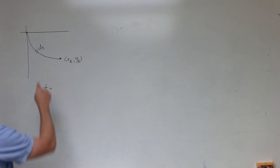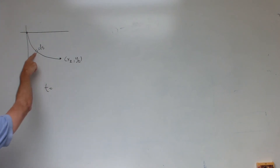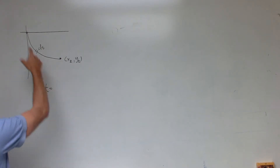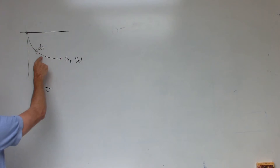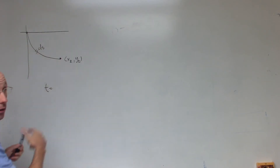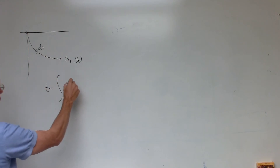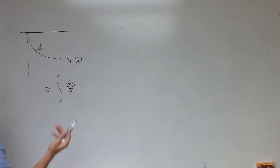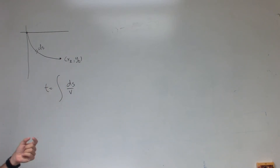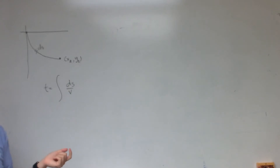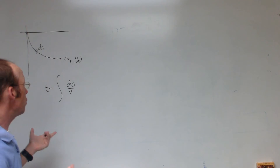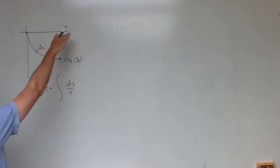So I could set up an integral: if I have some little piece of the path, ds, and I know the velocity it's traveling, then I can integrate the velocity over each piece and find the total time. So it would be the integral from the beginning to the end of ds over the velocity. So now the question is, what is ds? ds is the relationship between x and y, and that's what we're going to define as the path. But I don't know what that is.